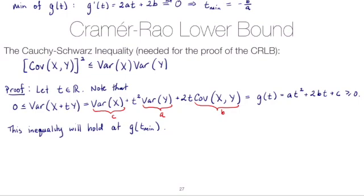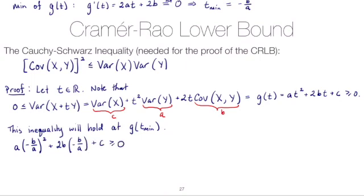We get the minimum value of G(t) by plugging in the minimizer. So the inequality holds at t_min. Plugging in: A·(−B/A)² + 2B·(−B/A) + C is greater than or equal to zero.